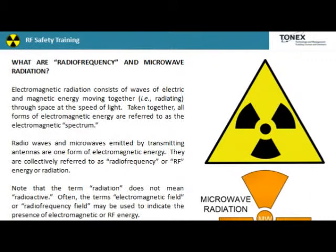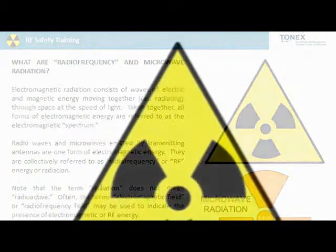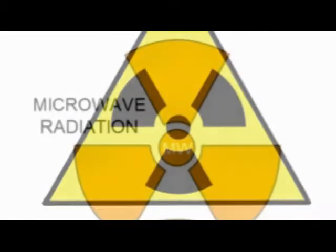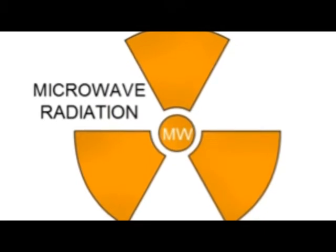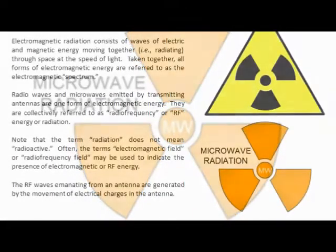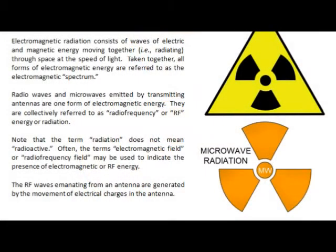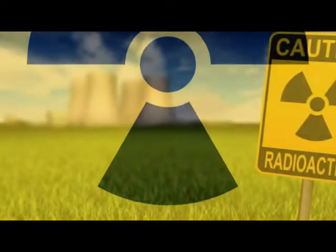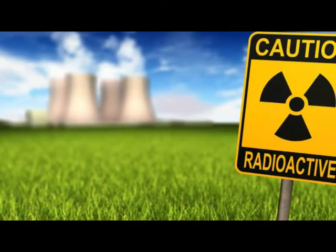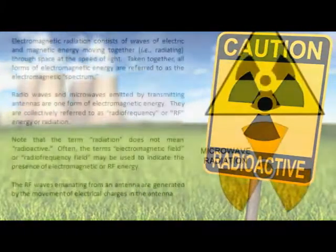What are Radio Frequency and Microwave Radiation? Electromagnetic radiation consists of waves of electric and magnetic energy moving together, radiated through space at the speed of light. Taken together, all forms of electromagnetic energy are referred to as the electromagnetic spectrum. Radio waves and microwaves emitted by transmitting antennas are one form of electromagnetic energy, collectively referred to as radiofrequency or RF energy or radiation.